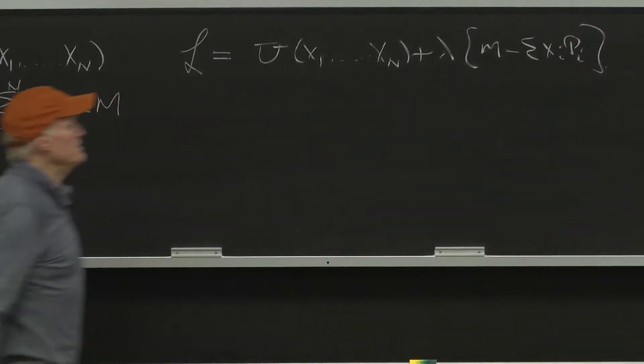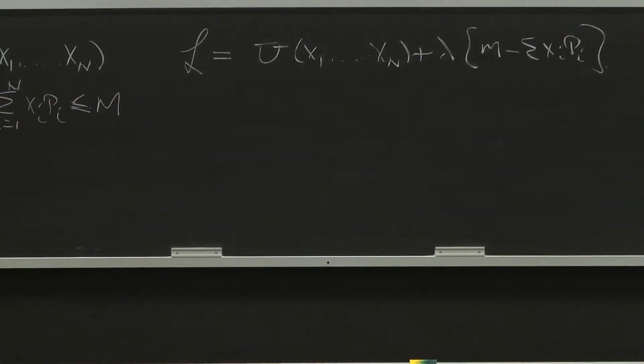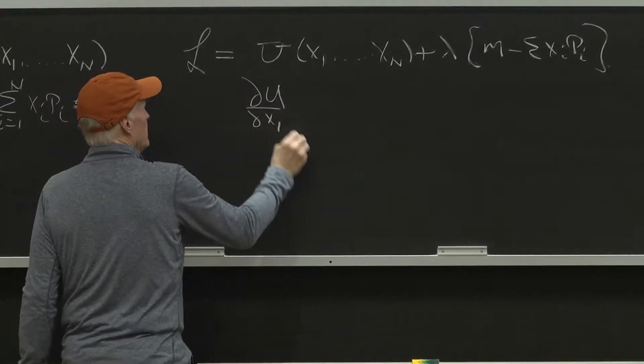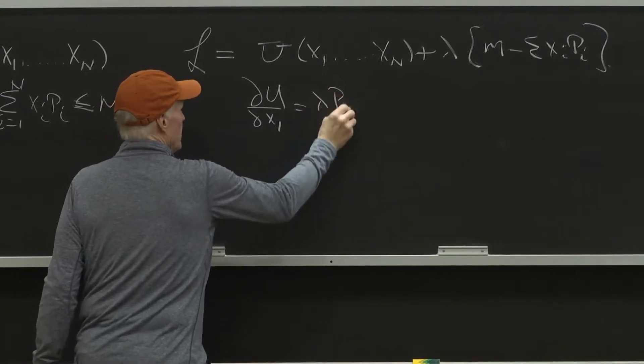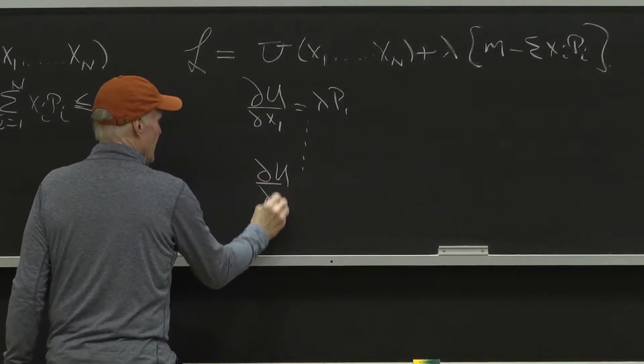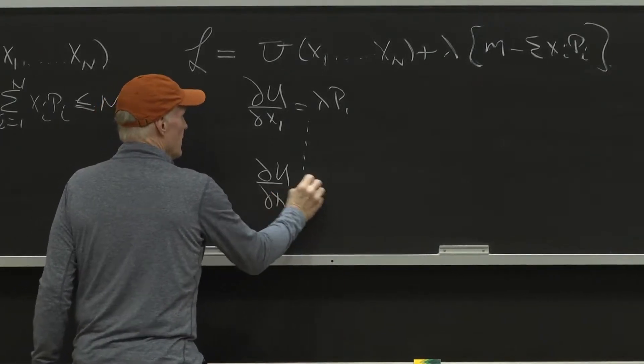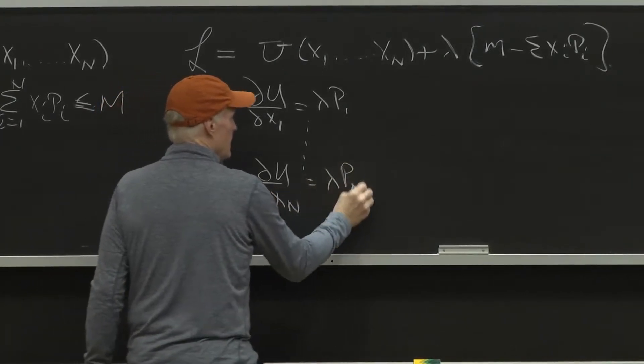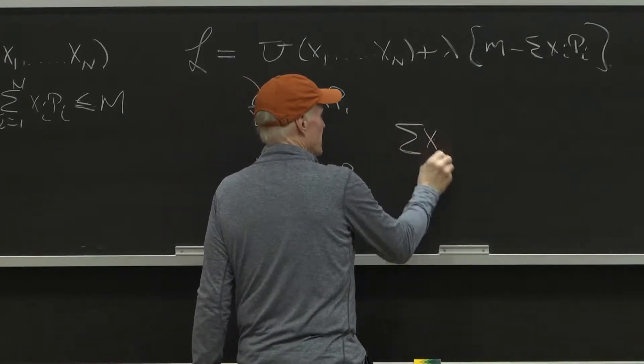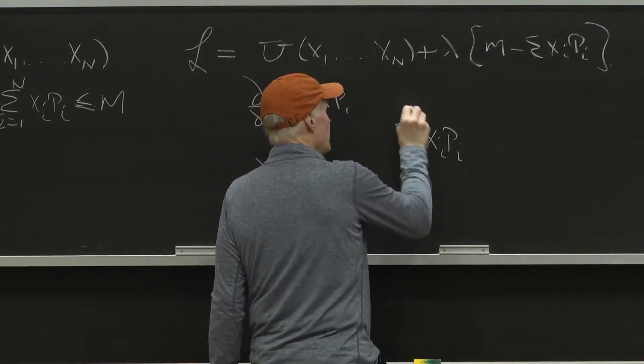The critical or first-order conditions for this are partial u partial x1 equals lambda p1, down to partial u partial xn equals lambda pn, and the budget constraint itself: sum of xi pi, i equals 1 to n, equals m.